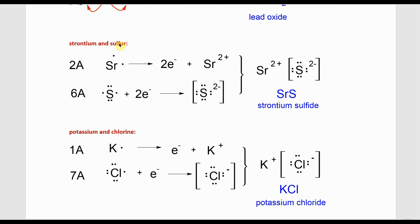Strontium combining with sulfur: strontium is in group 2A, like magnesium, loses two electrons to produce the Sr²⁺ cation. Sulfur is in group 6A, like oxygen, and gains two electrons to form an S²⁻ anion. The total positive and negative charges are equal in a 1:1 ratio. Here is the correct Lewis structure of strontium sulfide. The formula is SrS, and its name is strontium sulfide.